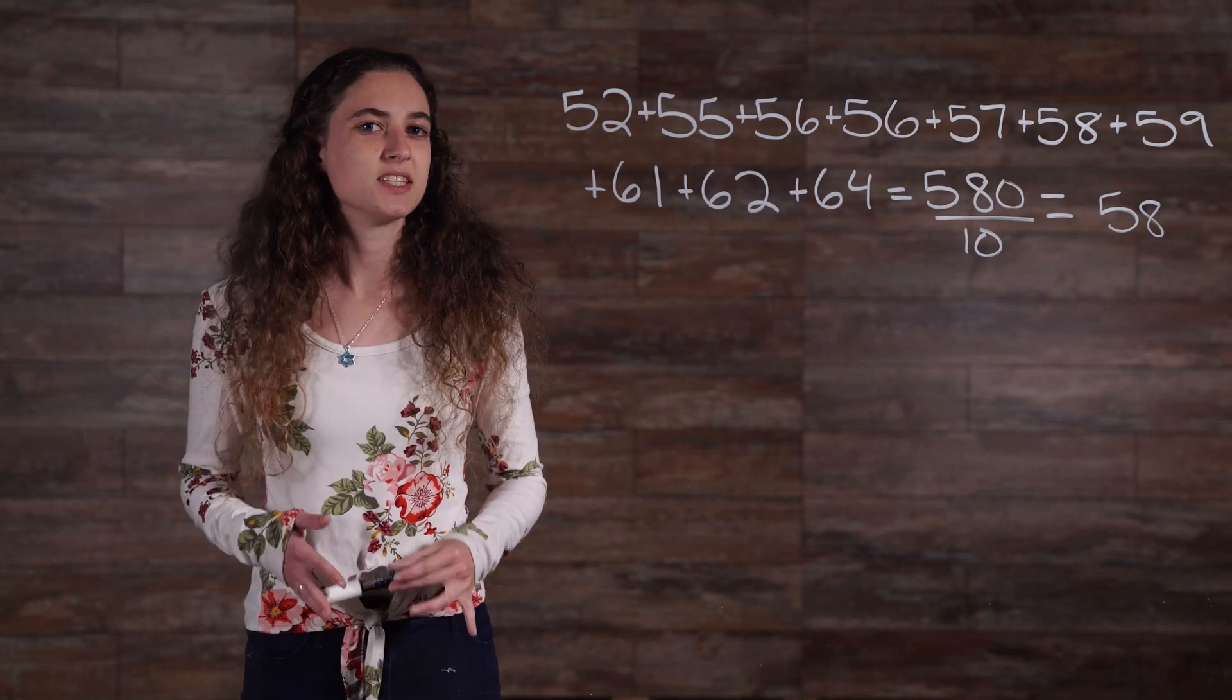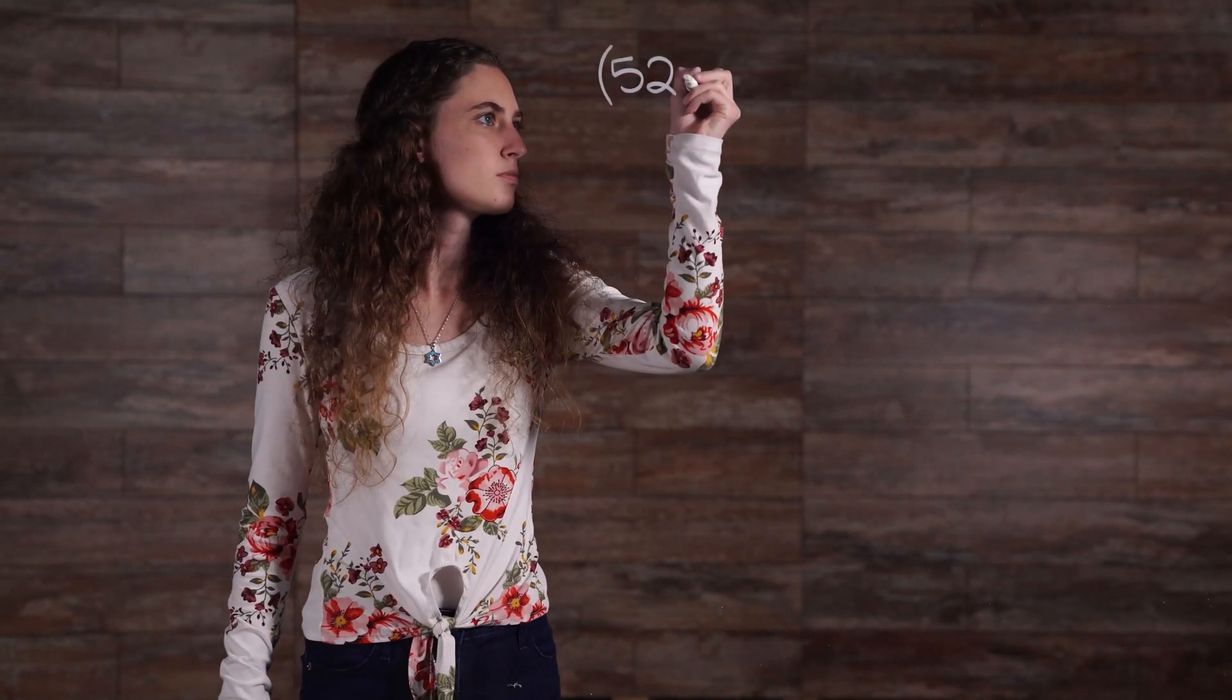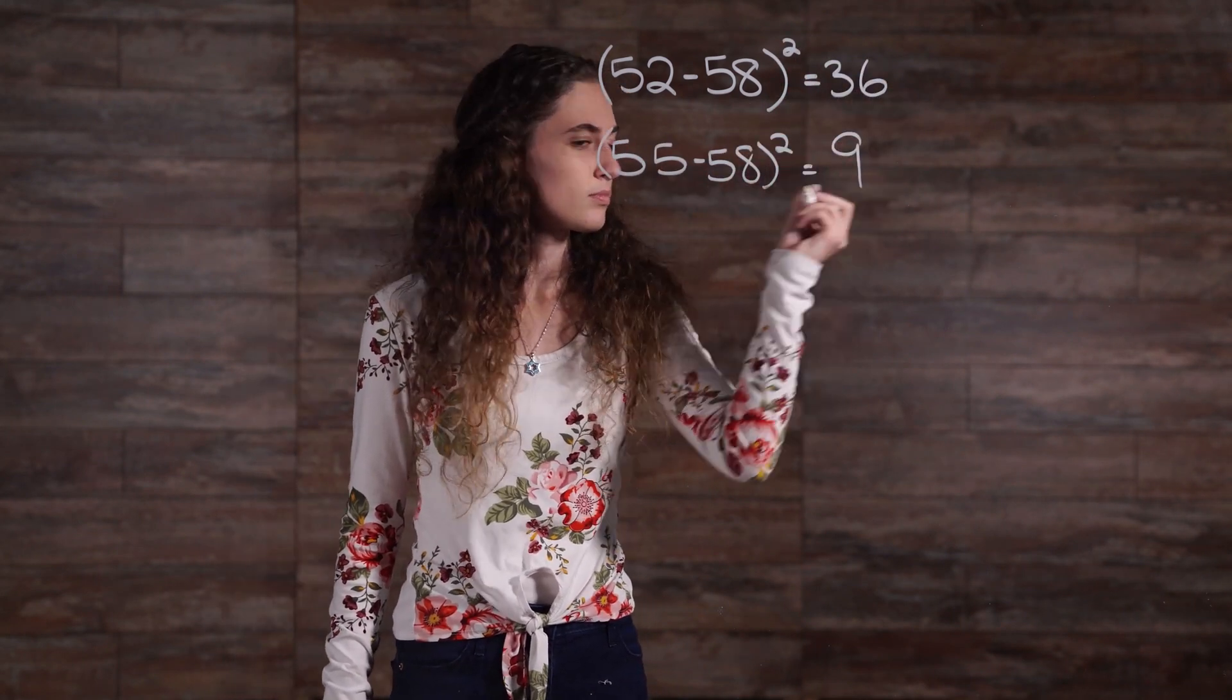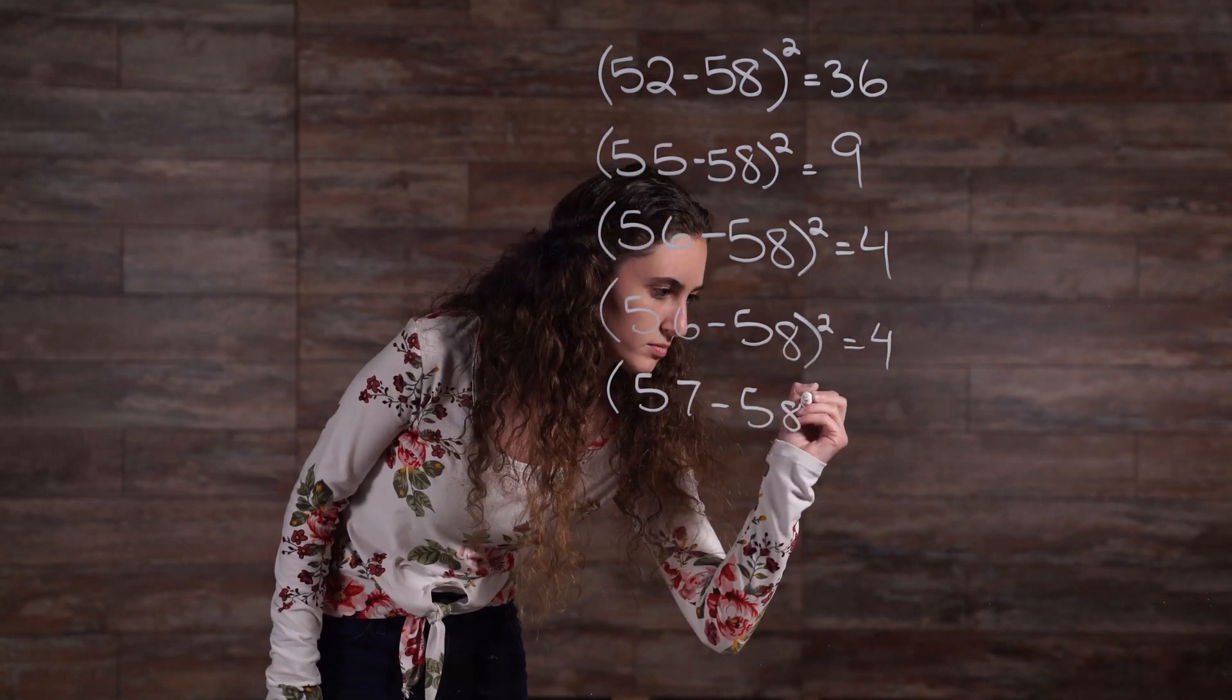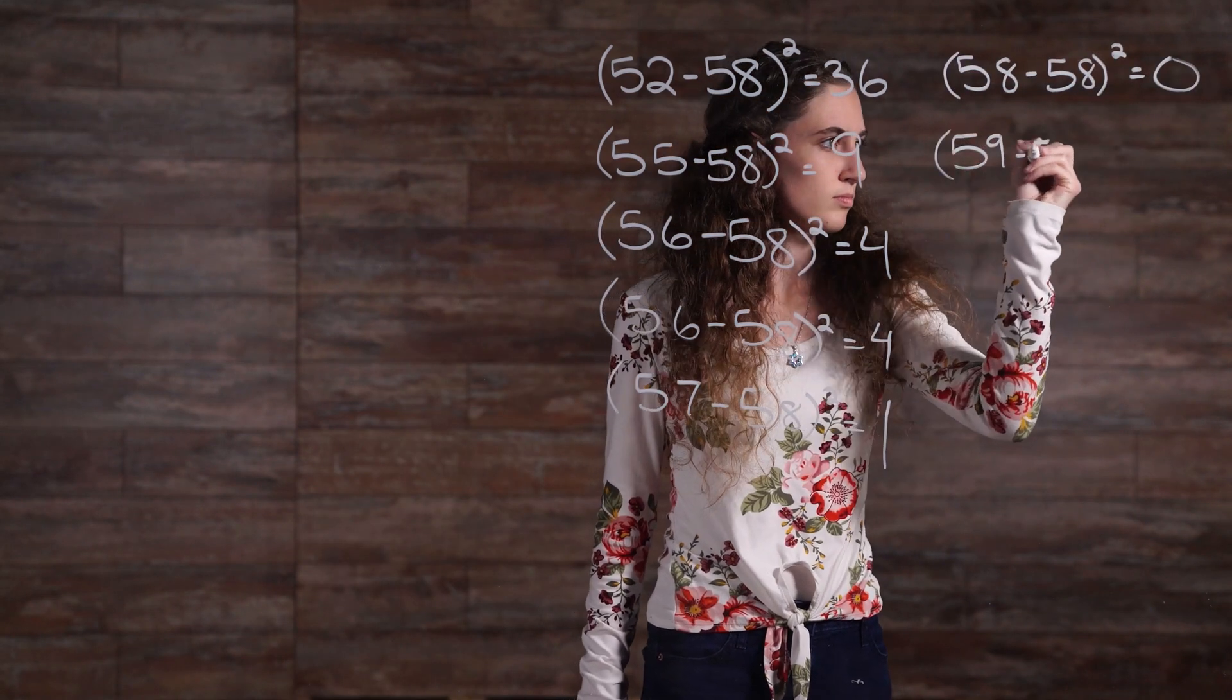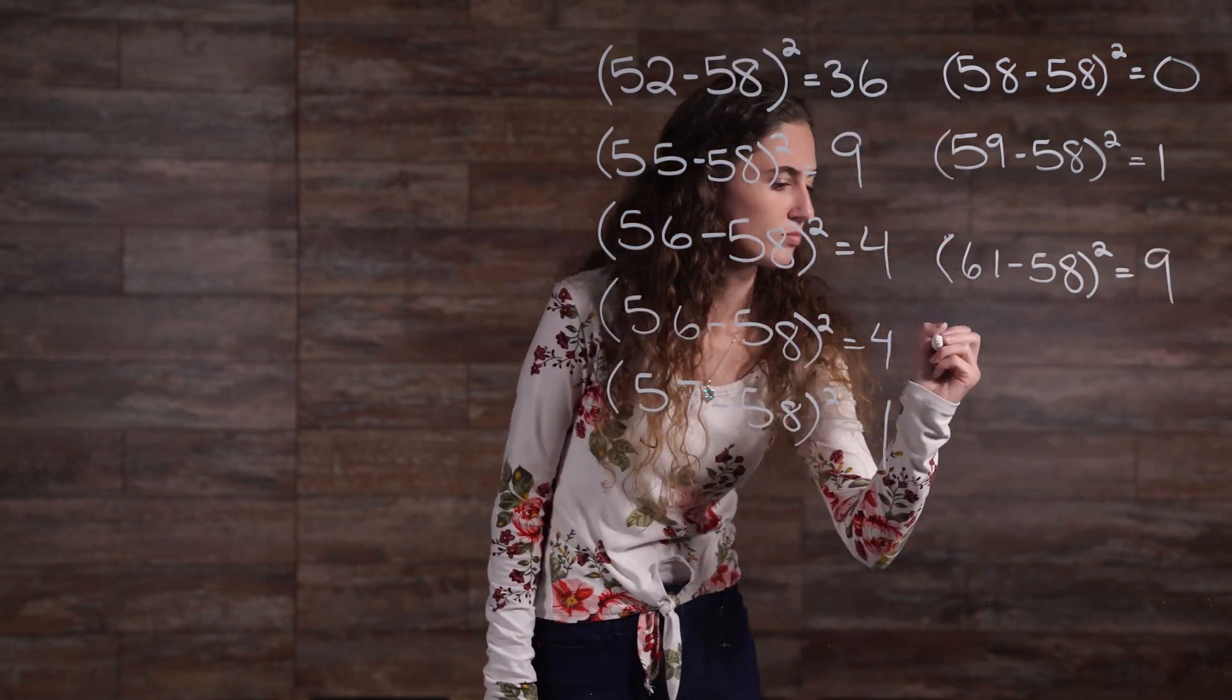Step 2 is to take the difference between each number and the mean, and then square it.